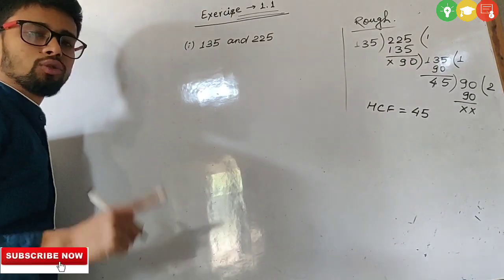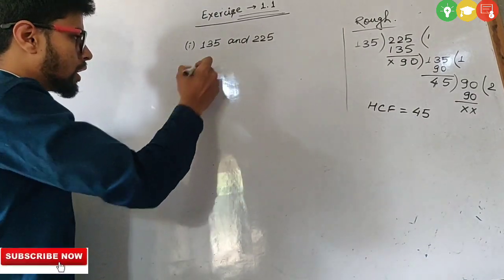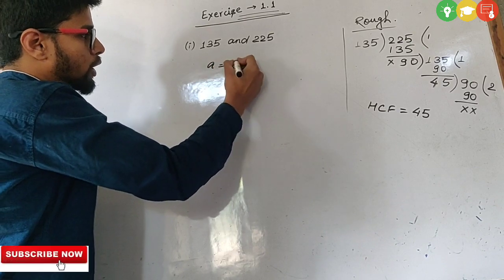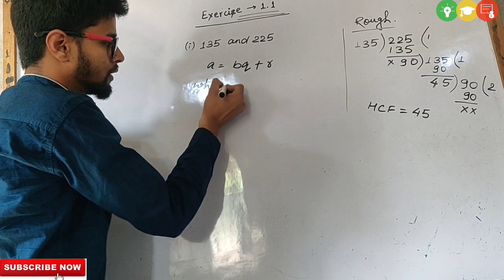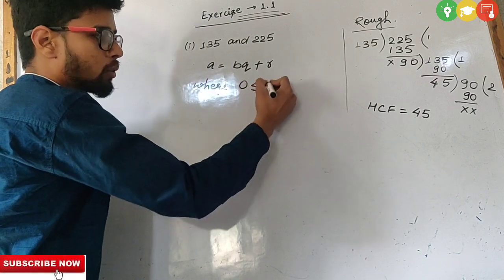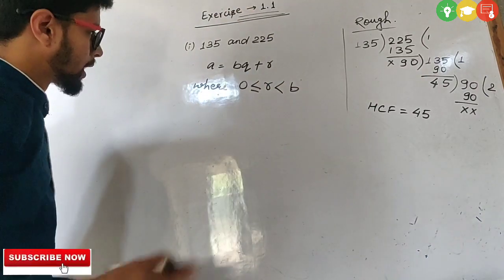Again, solve with the help of the Euclid's division lemma. This is your course. Now, we know that A is equal to BQ plus R where 0 is smaller than or equal to R and R is smaller than B.